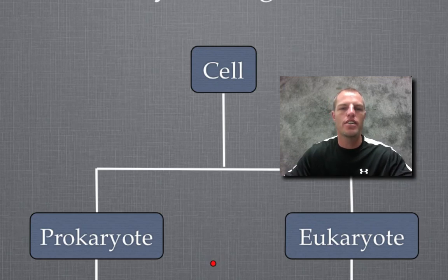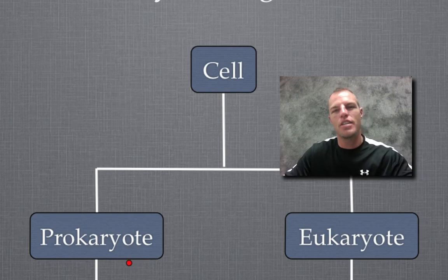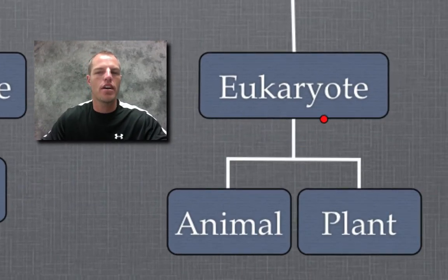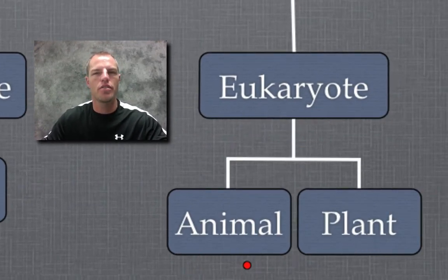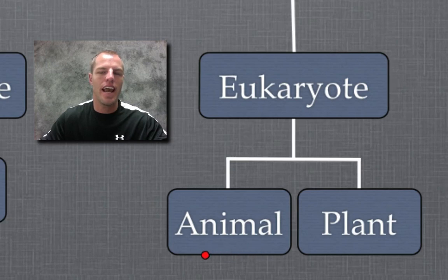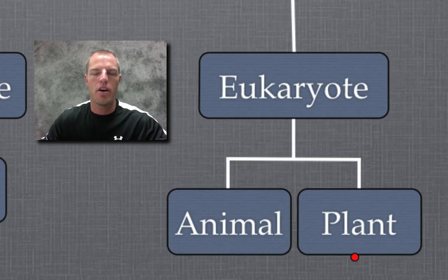The first one, if we look over here on the left, is prokaryotes. In biology, when we talk about prokaryotes, we're talking about bacteria. If we slide over to the right, we have our eukaryotes. Underneath that I put animals and plants. We're going to specifically be looking at the animal cell and the plant cell as we look at the different parts and how they function within the cell.